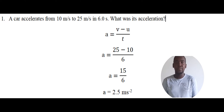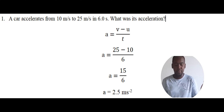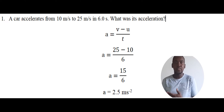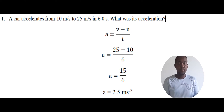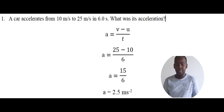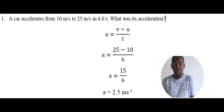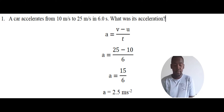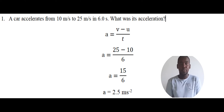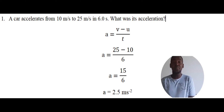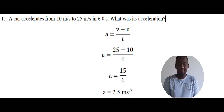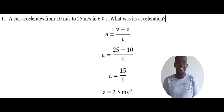So we can use a equals v minus u over t. The v, the final velocity, is 25. The initial u is 10, over the time 6, and we get 2.5 meters per second squared. So that was an easy one.